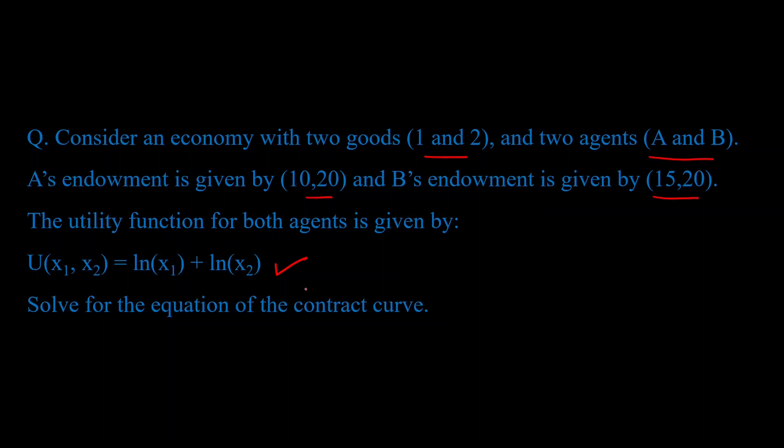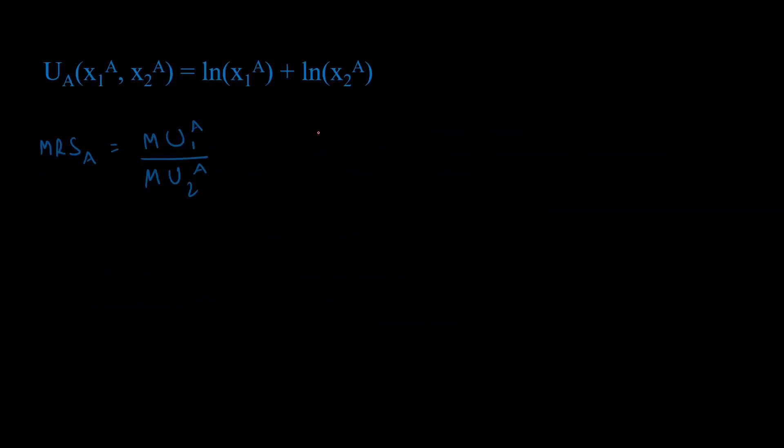So let's do some math. First, let's find out the marginal rate of substitution for agent A. It's given by dividing the marginal utility of good 1 by marginal utility of good 2. This is the utility function. So for marginal utility of good 1, all you have to do is take the utility function and partially differentiate it with respect to x1a. So you differentiate ln(x1a), you'll get 1 by x1a, and this you essentially treat as a constant, so this will become 0. So marginal utility of good 1 is 1 by x1a. Similarly, you can do it for marginal utility of good 2a as well. So you differentiate the utility function this time with x2a. Again, x1a will be treated as a constant, so that becomes 0, and ln(x2a) is just 1 by x2a.